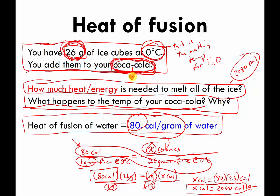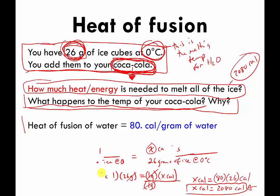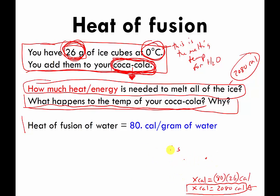What we just did is called a heat of fusion calculation — we figured out how much energy it took to melt 26 grams of ice cubes. Again, don't memorize 80 calories per gram of water; it's a waste of time. But you should be able to use that information if it shows up on a quiz or test.